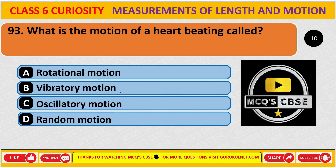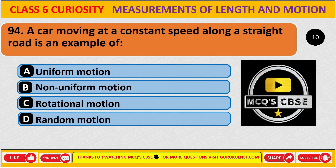What is the motion of a heart beating called? A car moving at a constant speed along a straight road is an example of uniform motion. The correct answer is A, uniform motion.